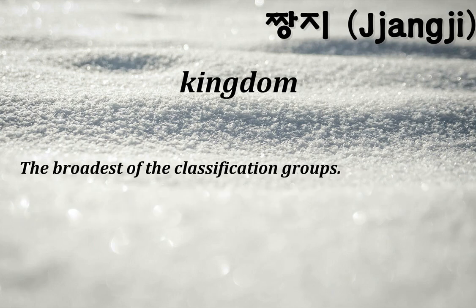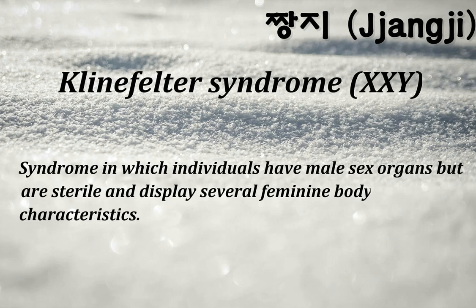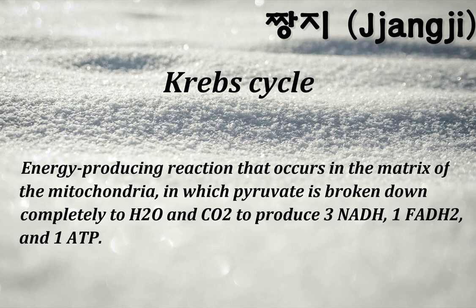Kingdom: the broadest of the classification groups. Klinefelter syndrome (XXY): syndrome in which individuals have male sex organs but are sterile and display several feminine body characteristics. Krebs cycle: energy-producing reaction that occurs in the matrix of the mitochondria, in which pyruvate is broken down completely to H2O and CO2 to produce three NADH, one FADH2, and one ATP.